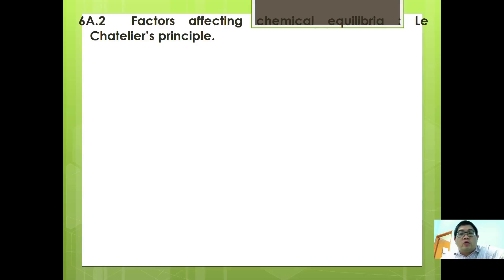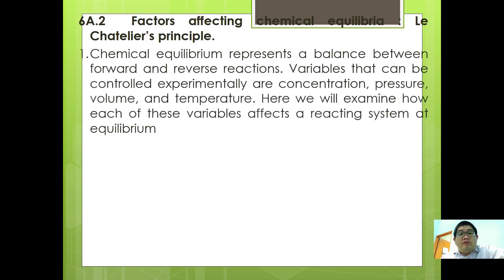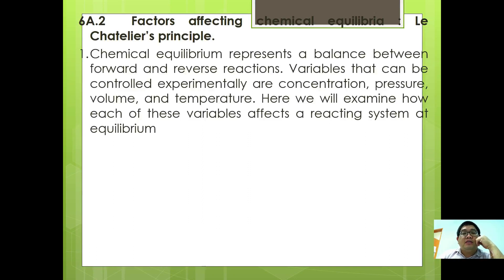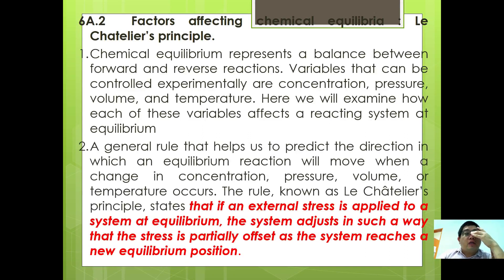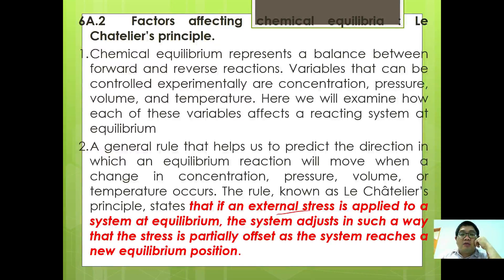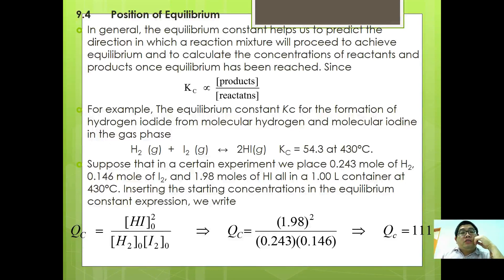This is the fourth video, and we're going to discuss factors affecting chemical equilibrium, which is Le Chatelier's principle. Chemical equilibrium presents a balance between the forward and reverse reactions. Variables that can be controlled experimentally are concentration, pressure, volume, and temperature. We will examine how each of these variables affects a reacting system at equilibrium.